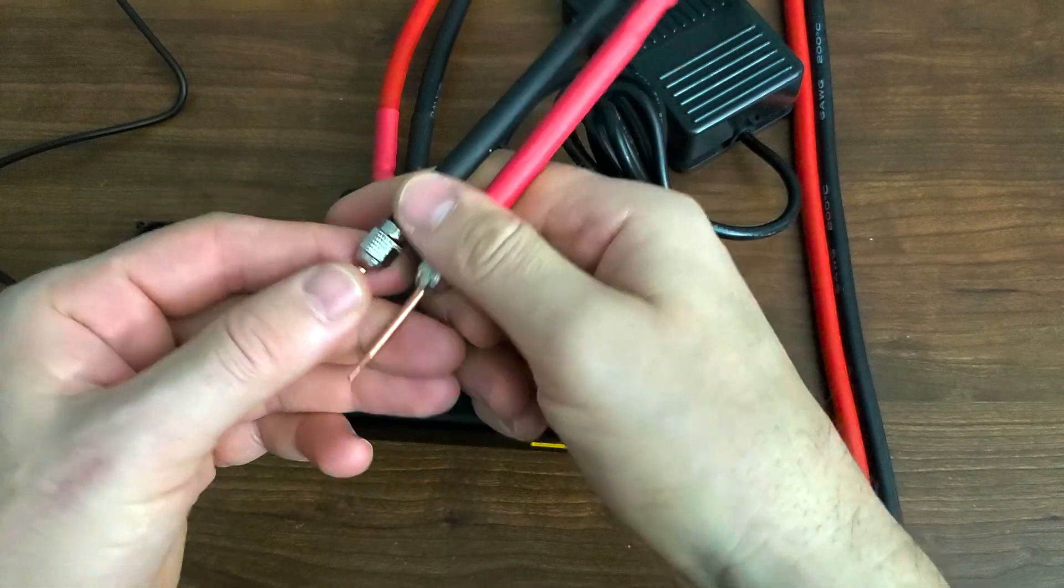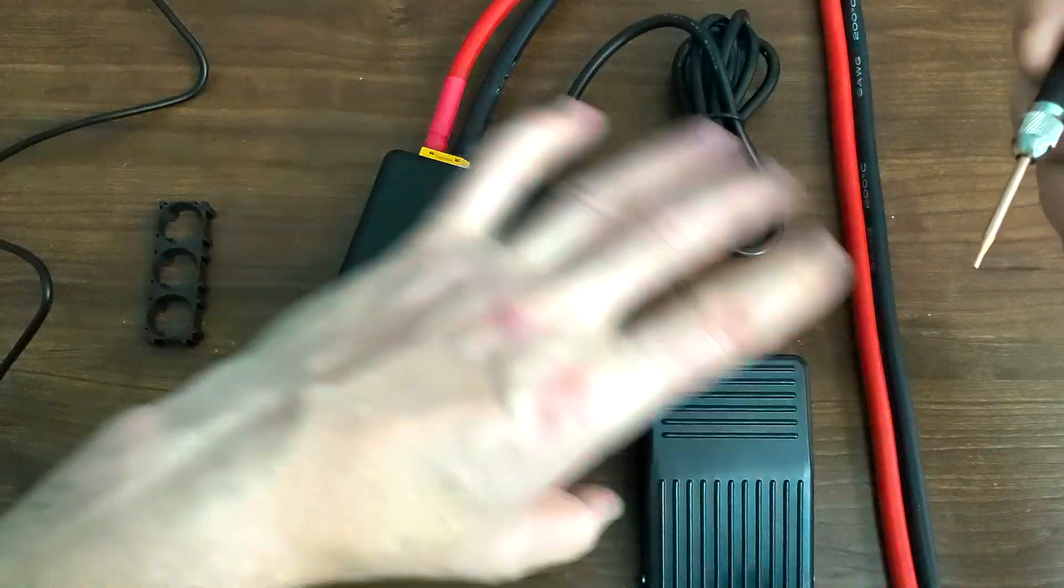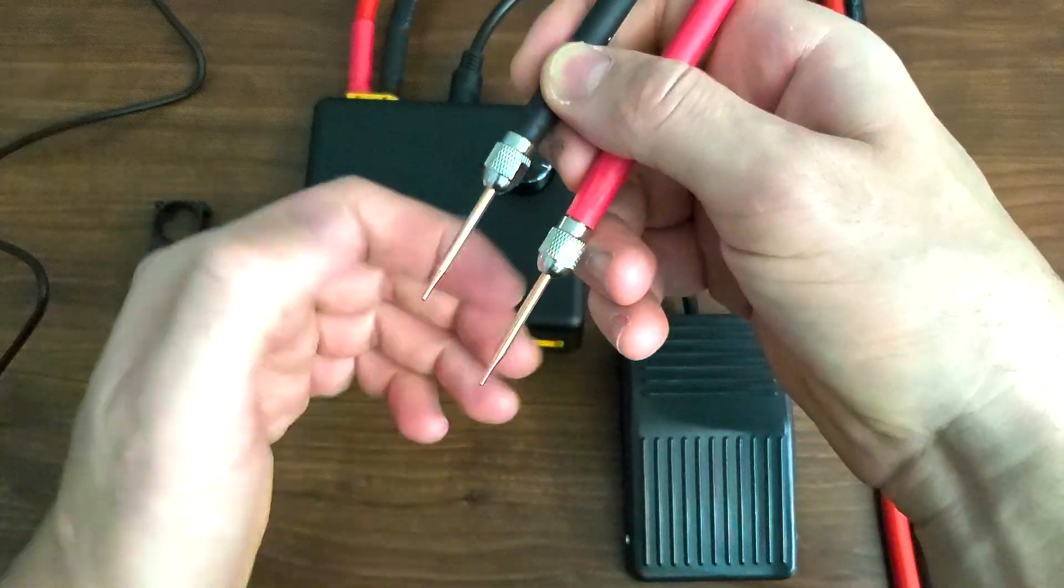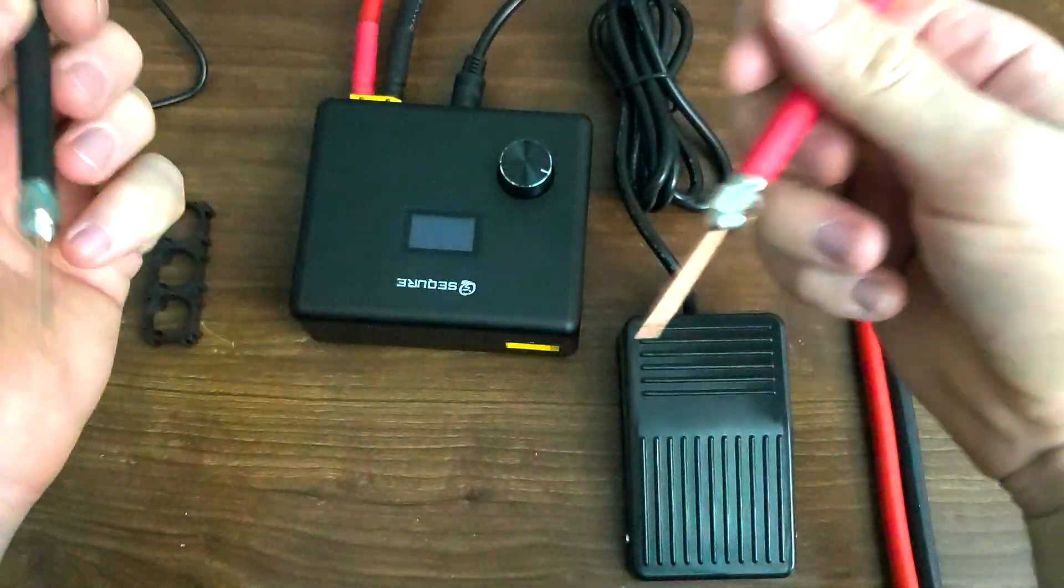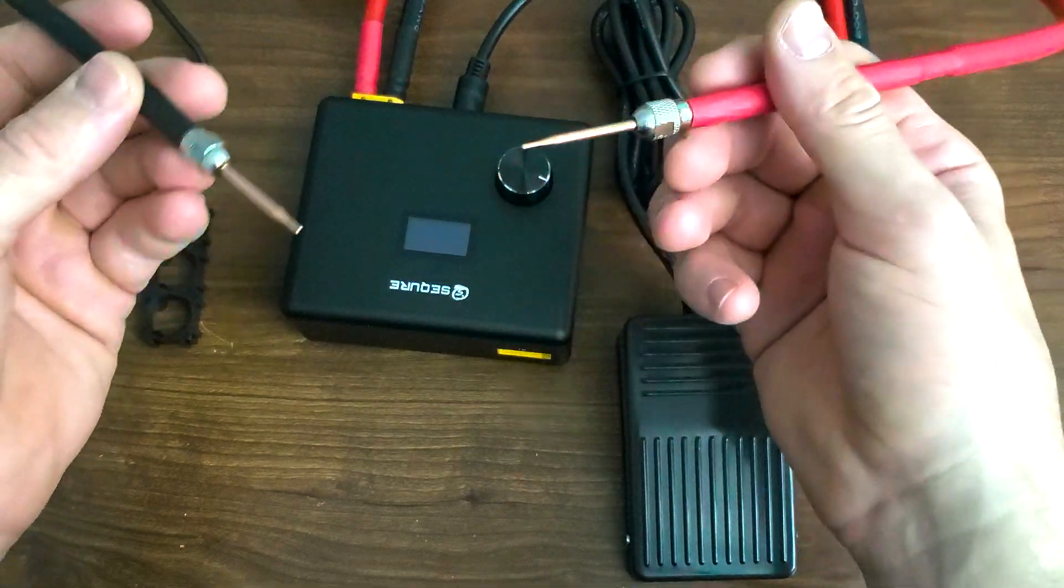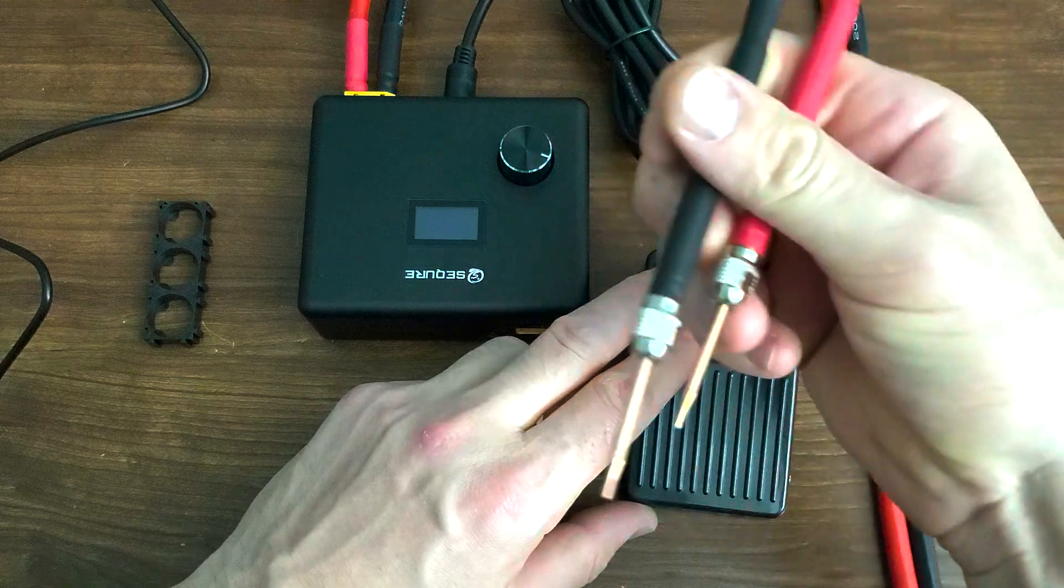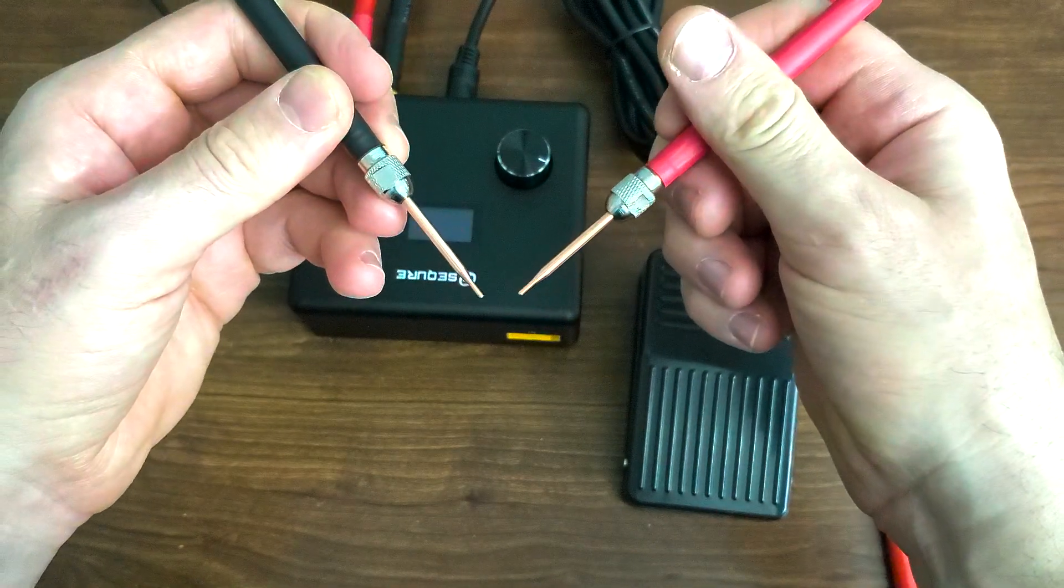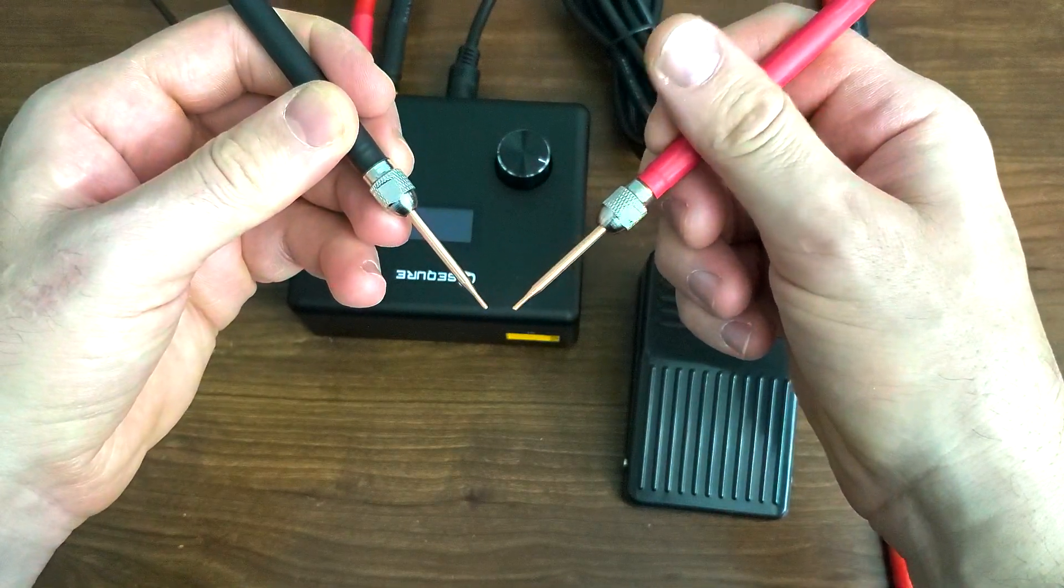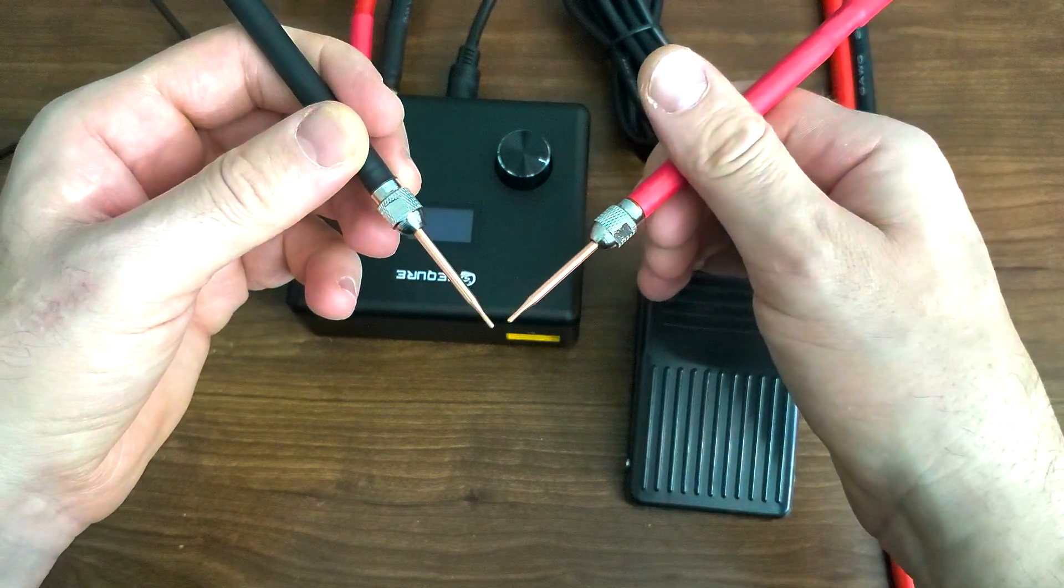Once you set this up, the benefit of the second option is that once you connect the surface of the cell and you have a secure grip and have it exactly where you want it. The benefit is that these are separated so you can actually work on a bigger battery. When you connect with both hands exactly where you want to spot weld, you press the foot pedal and you finish the weld.